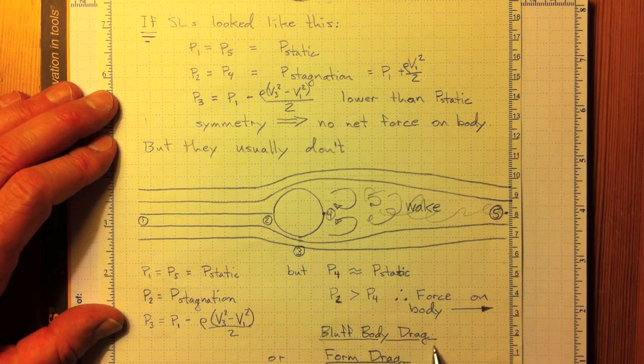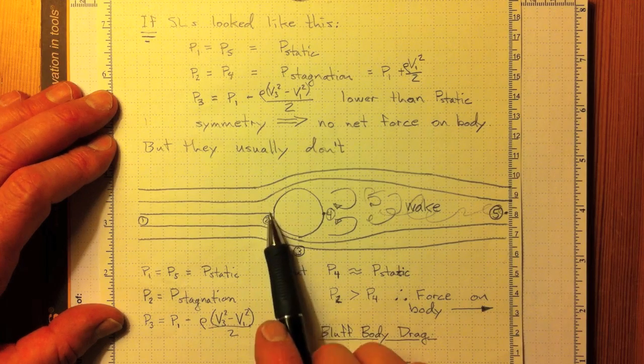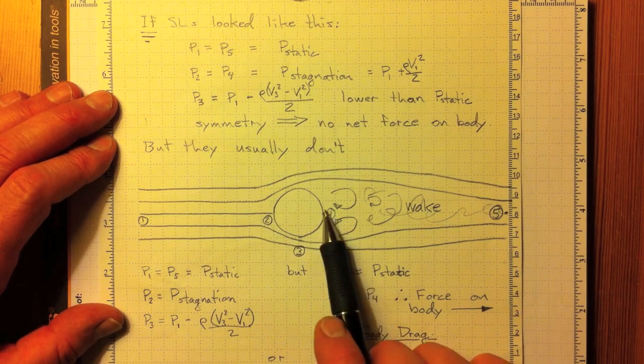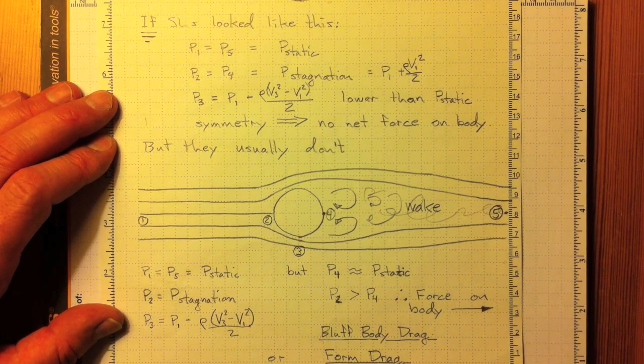So this is called bluff body drag, or form drag, and it's due to the pressure difference. We've got stagnation pressure on the front, and a pressure not too different from atmospheric pressure on the back.